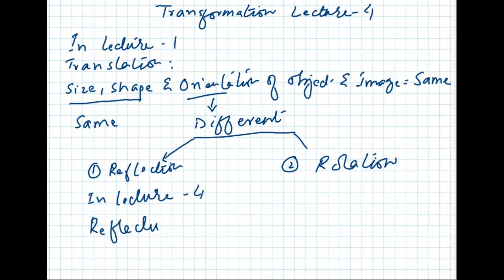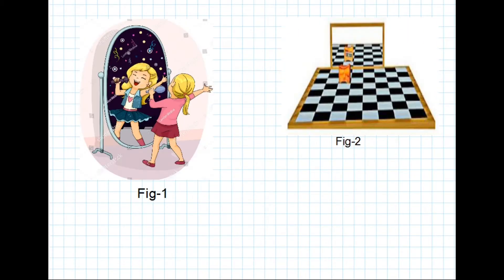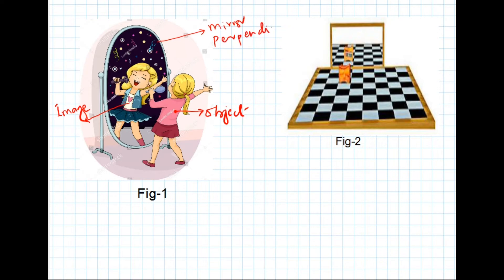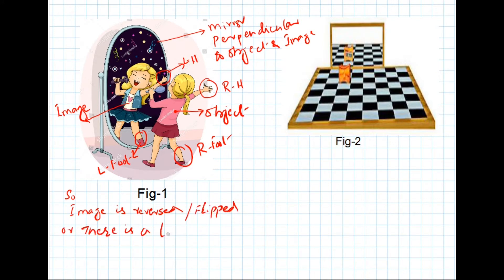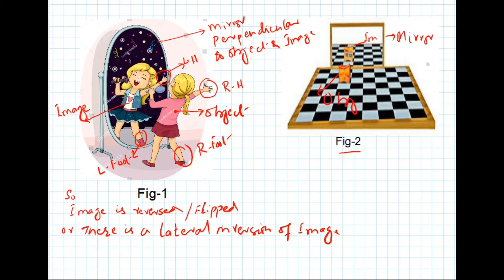In figure one there is a girl standing in front of the mirror. This is our object. We can see the image of the girl in the mirror. The mirror is perpendicular to the object and the image. We can observe that the right hand of the object becomes the left hand of the image, and the right foot of the object becomes the left foot of the image. So the image is reversed — we can say it is flipped, or there is a lateral inversion of the image. In figure two, the object is in front of the mirror and its image is formed in the mirror.